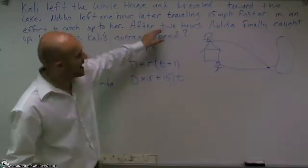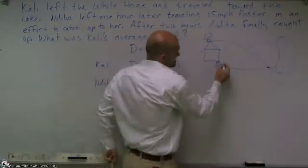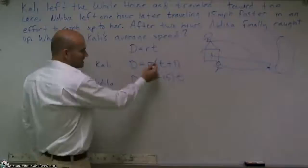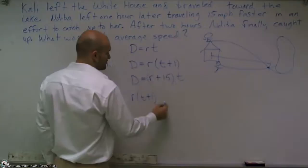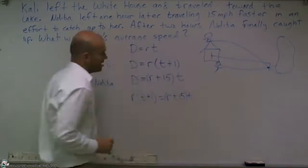So now I look at this and it says after two hours finally caught up. So that means they caught up, the distance that both of them traveled is equal to each other. So what I can say now is I can say this equation is equal to this equation. So I'll say R times T plus 1 is equal to R plus 15 times T.